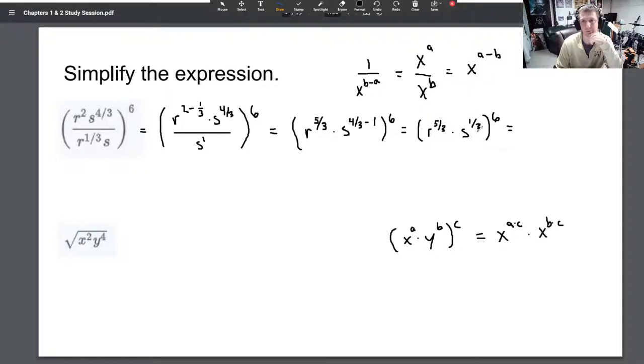We're gonna use this rule here. We've got r to the five-thirds times s to the one-third all raised to the sixth power, so we can take that six and distribute it to the powers. Five-thirds times six times s to the one-third times six. Well, five-thirds times six is ten, one-third of six is two, so that's our solution: r to the tenth s to the second, both multiplied together.